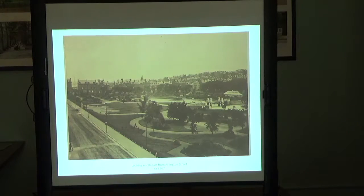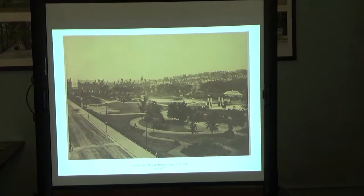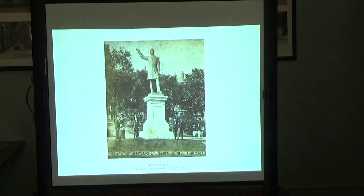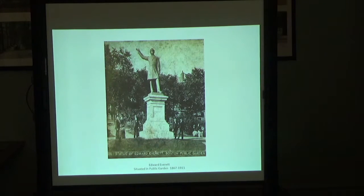This is a very early photograph of the public garden by George Meacham's plan — you have a greenhouse, the basins, and our very first sculpture, the Maid of the Mist or Venus sculpture in the fountain. We know it's around 1867 because that's the year the bridge was built. None of our other sculpture is there yet. In fact, the very first piece of sculpture to go into the public garden was Edward Everett — he was the governor of Massachusetts, a senator, secretary of state, ambassador to Great Britain, and for a short time president of Harvard.